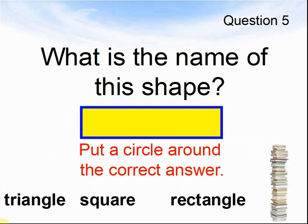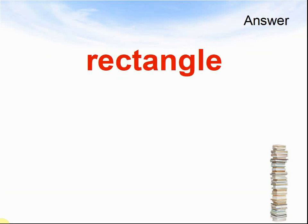Question 5. What is the name of this shape? Put a circle around the correct answer or copy down the words. Is it a triangle, a square or a rectangle? Pause the video until you are ready to see the answer. Here comes the answer. It is a rectangle.